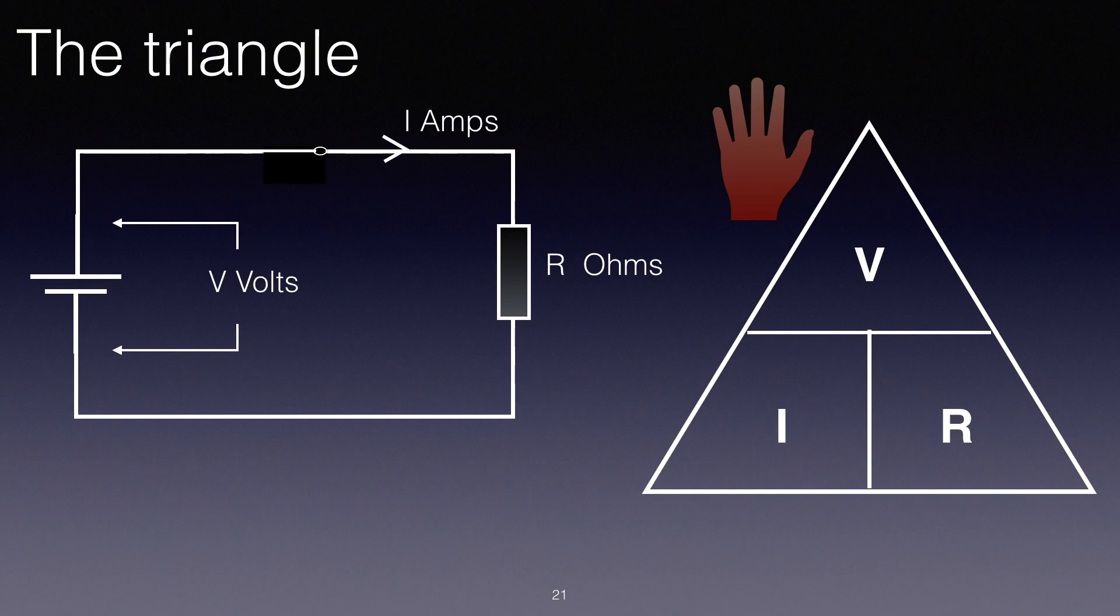And then finally we can make R the subject of the formula by covering up the R, and we have V over I. So we can write the formula down R equals V over I.